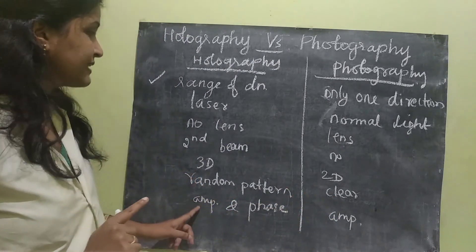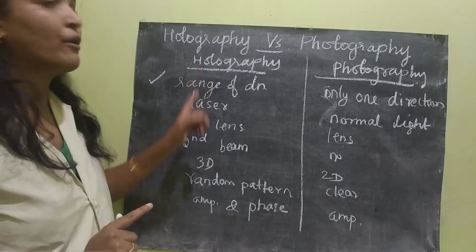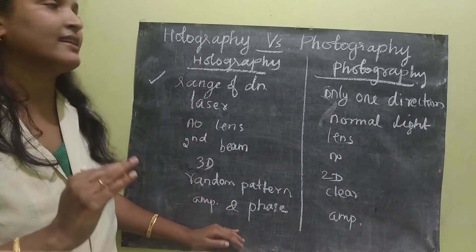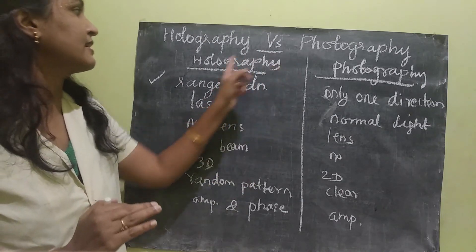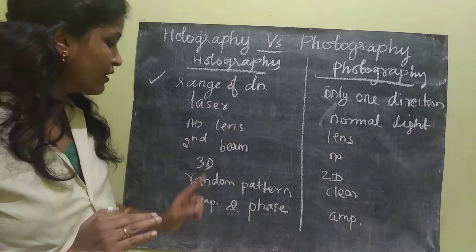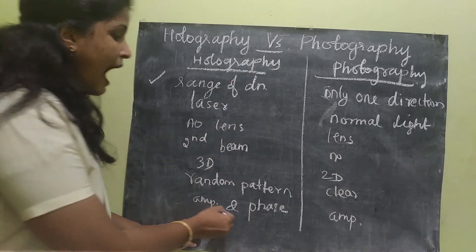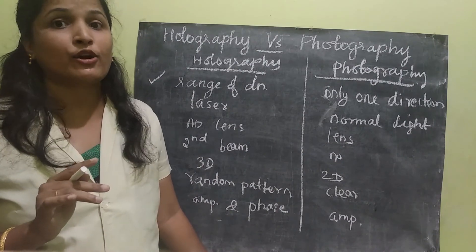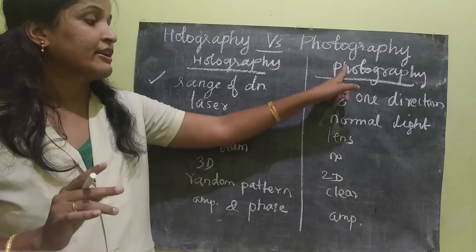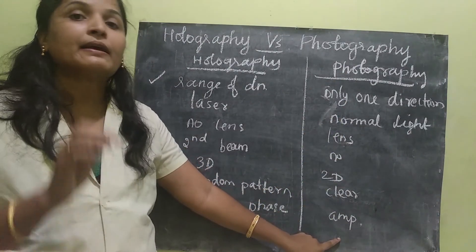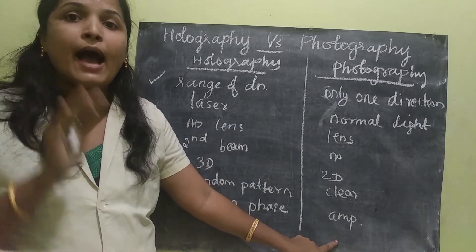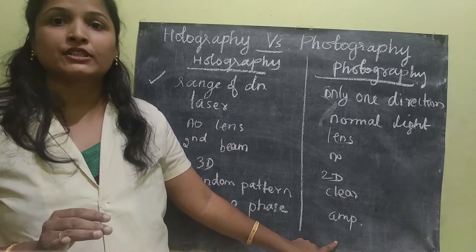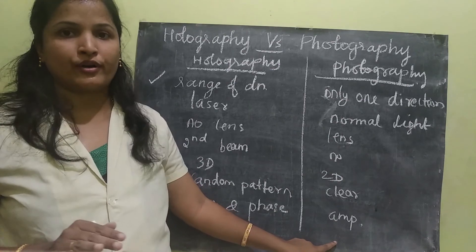The next important technical difference is that in holography, both amplitude and phase information are recorded. But in photography, only amplitude information is recorded.